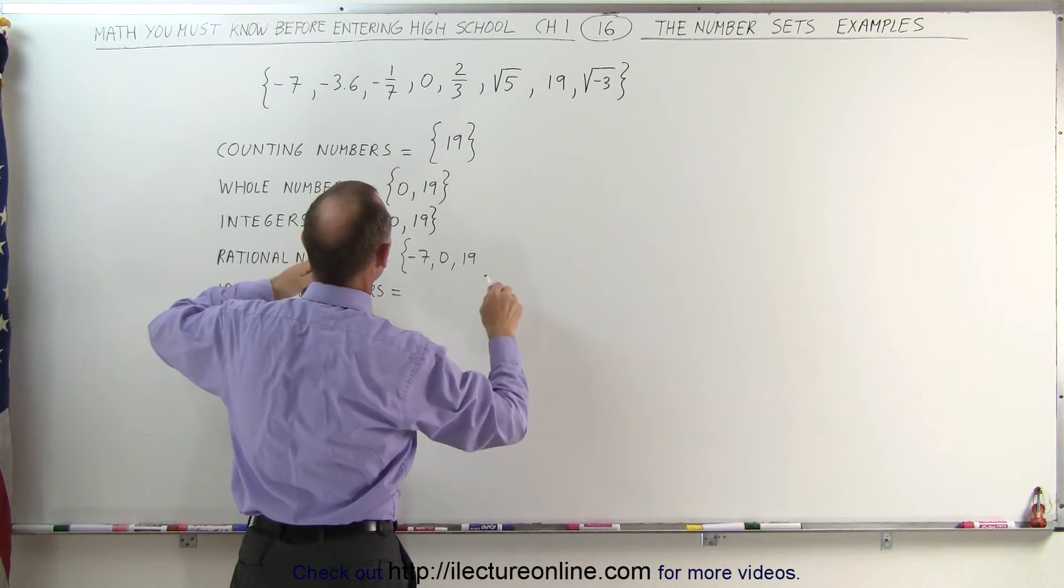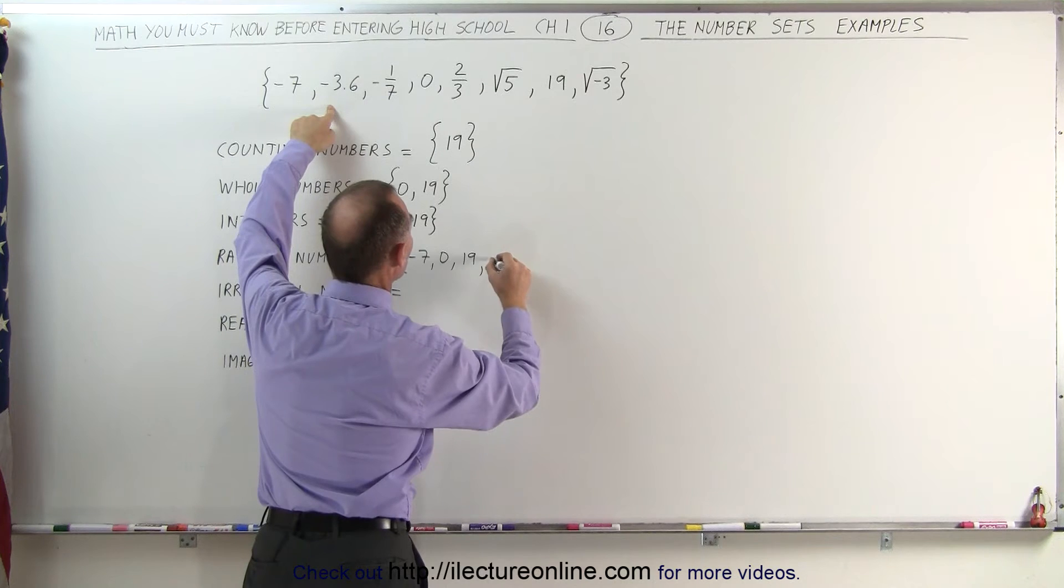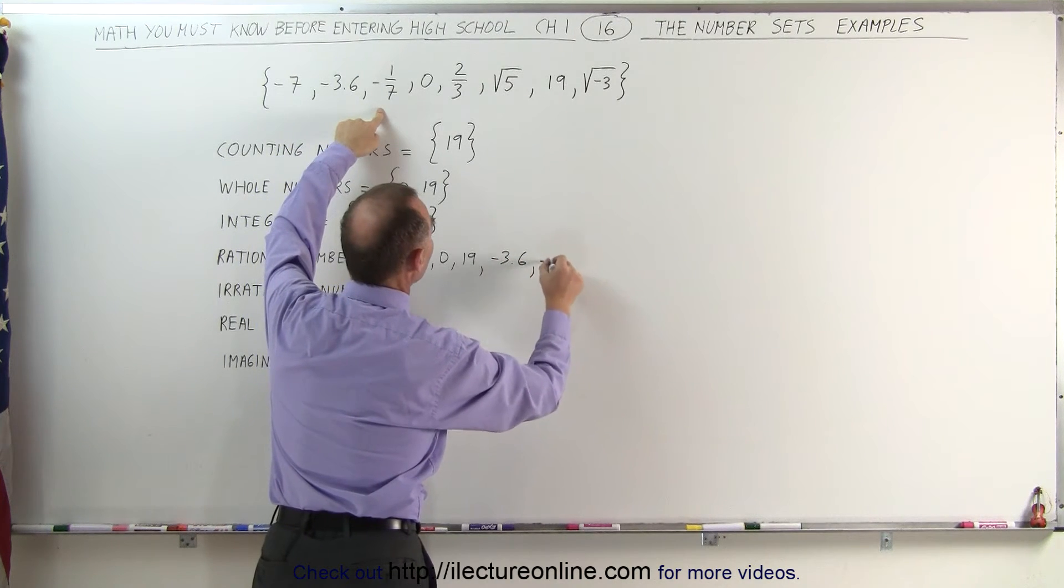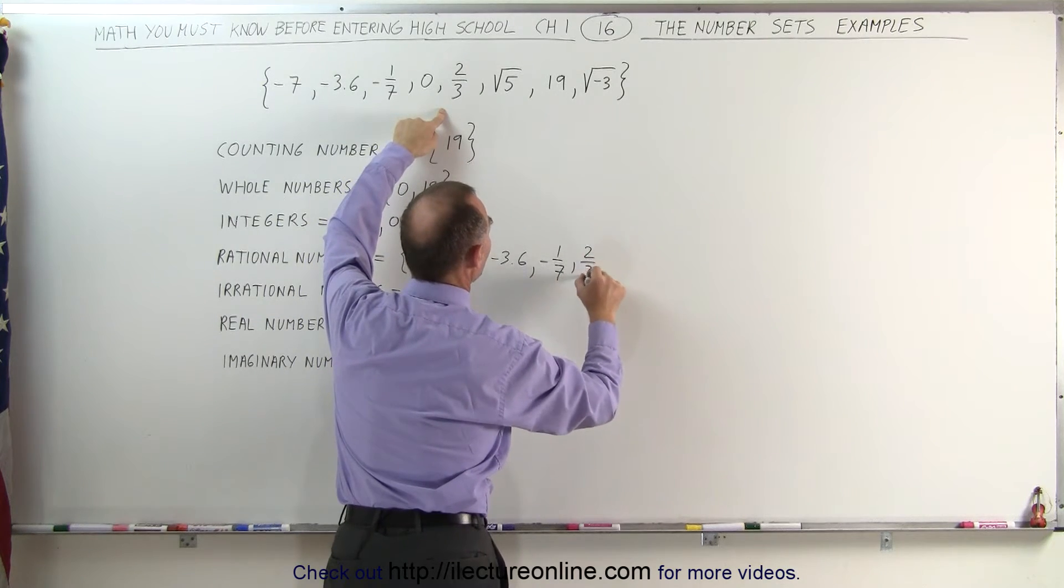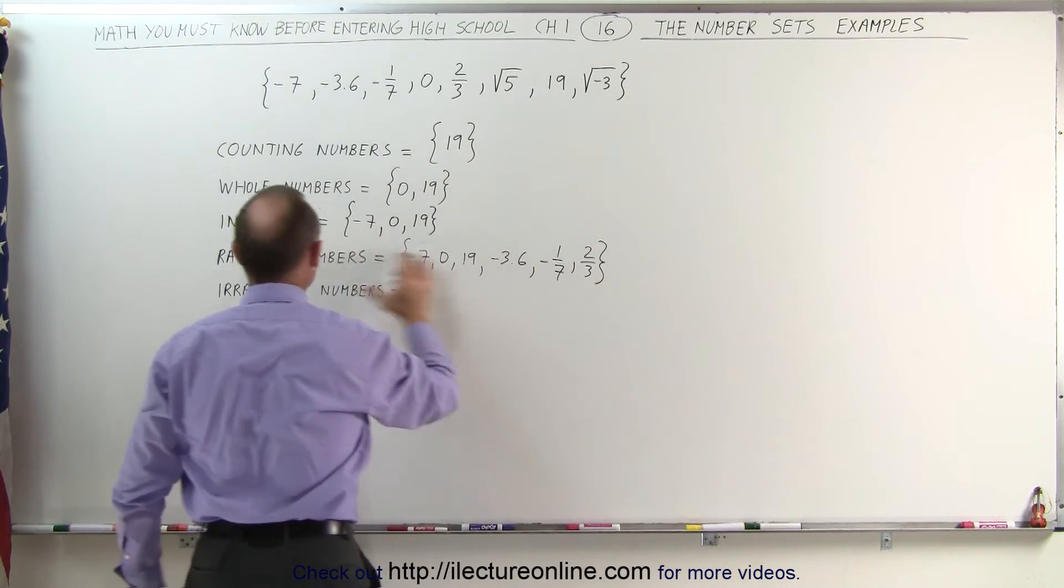So we can include to that the number minus 3.6, the number negative 1 over 7, and the number 2 over 3. So these are all the rational numbers.